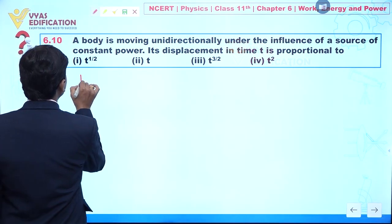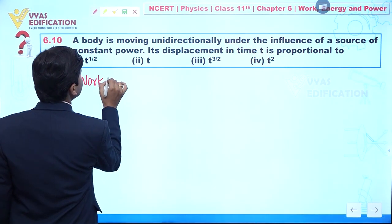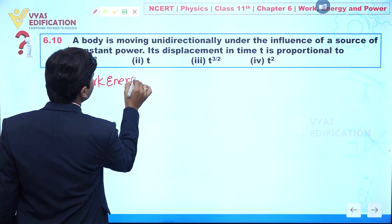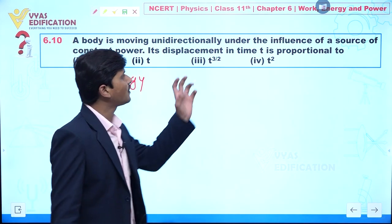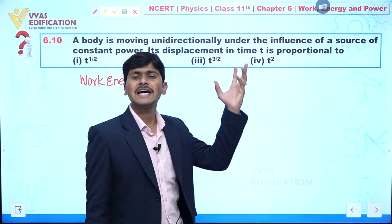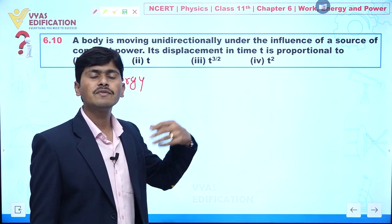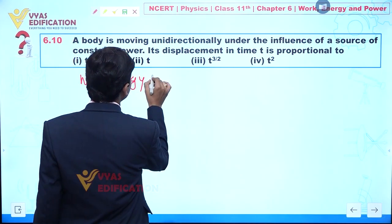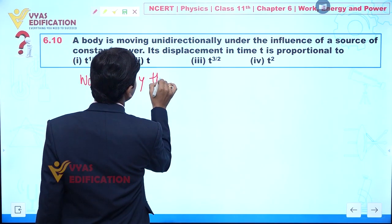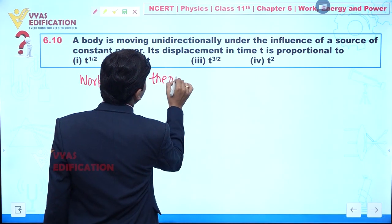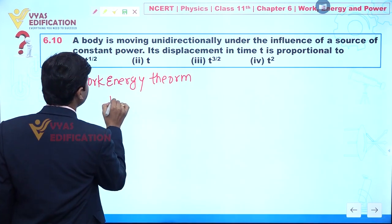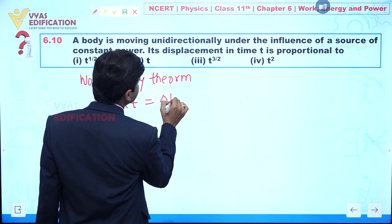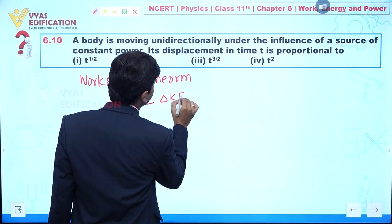Our objective in this question is to find displacement as a function of time. For that, we need velocity. So I am applying the work-energy theorem here. According to the work-energy theorem, net work done should be equal to change in kinetic energy.